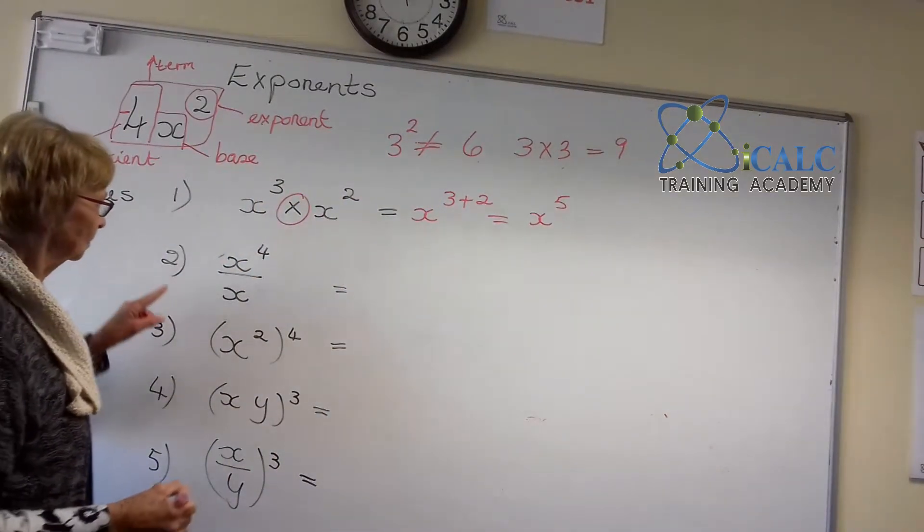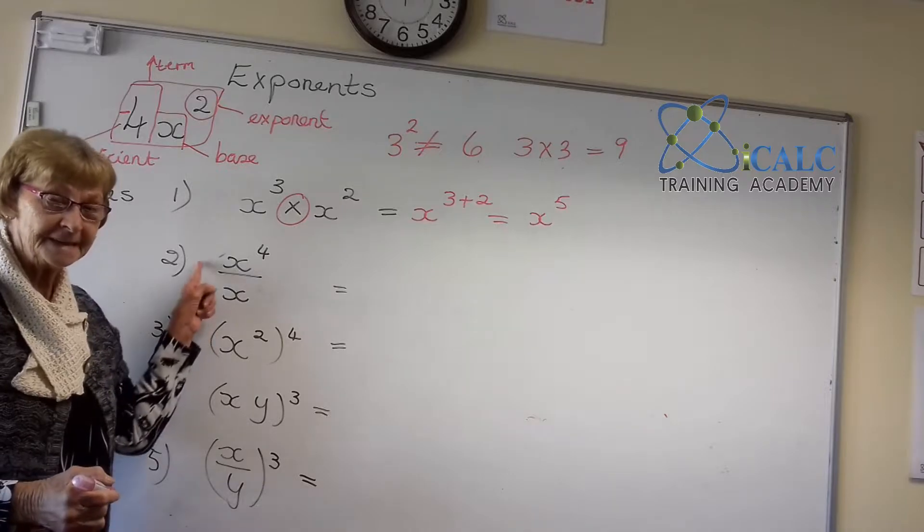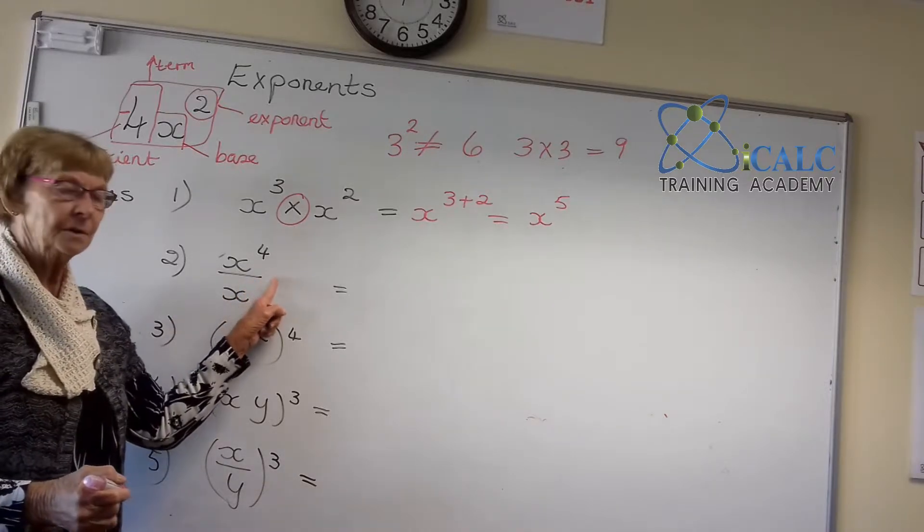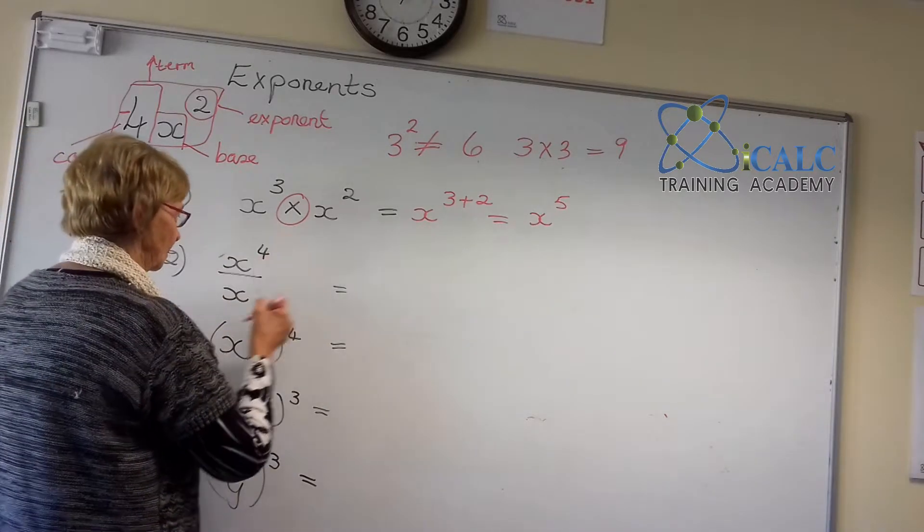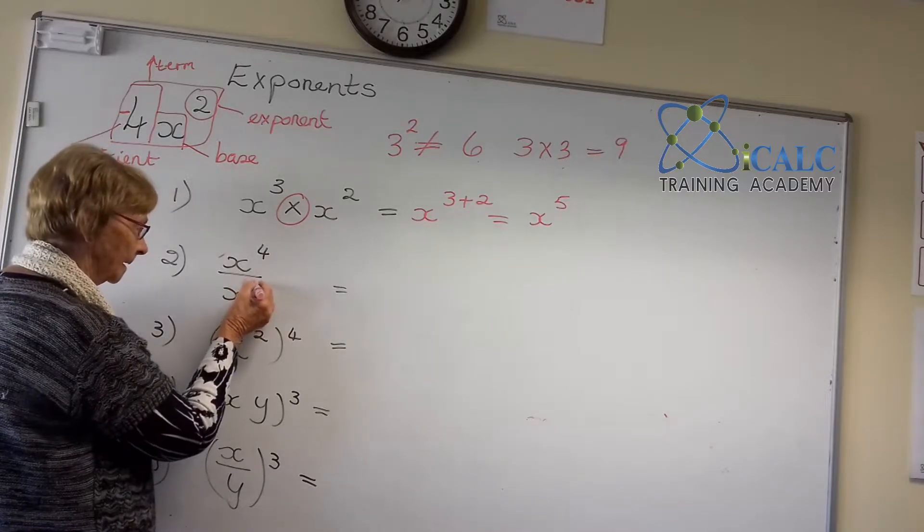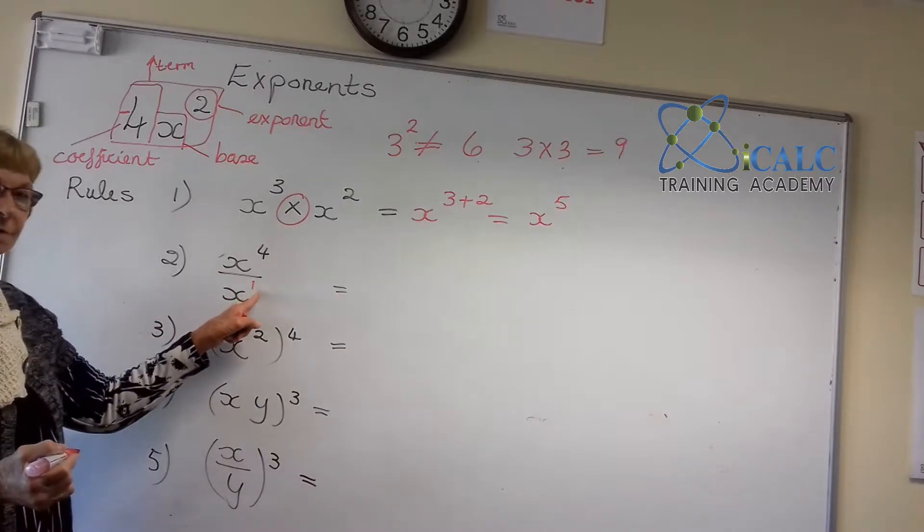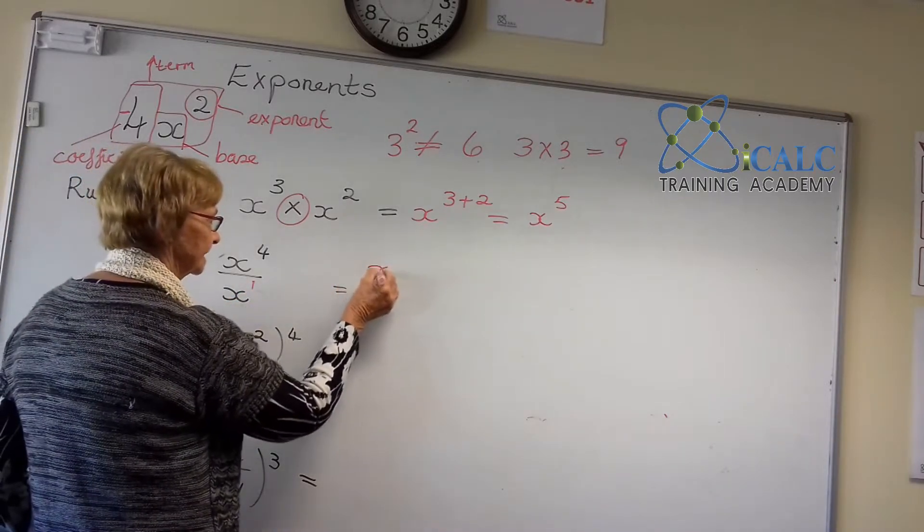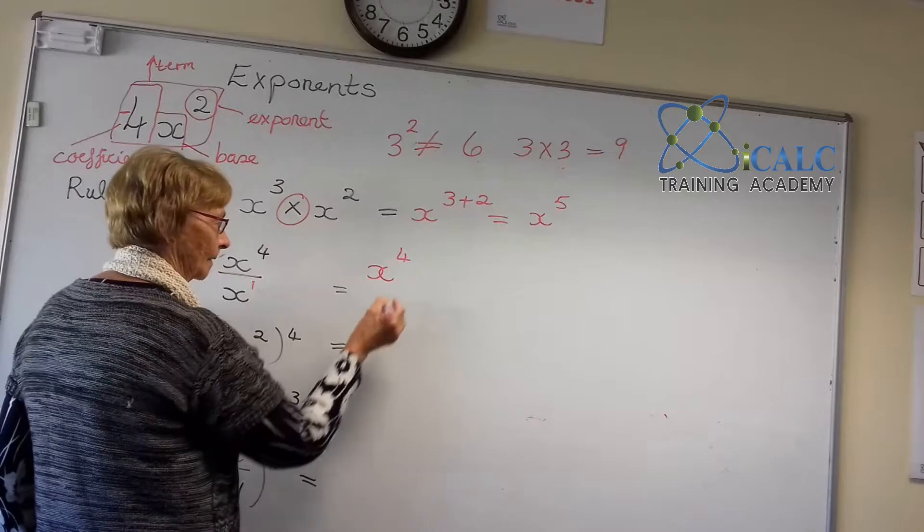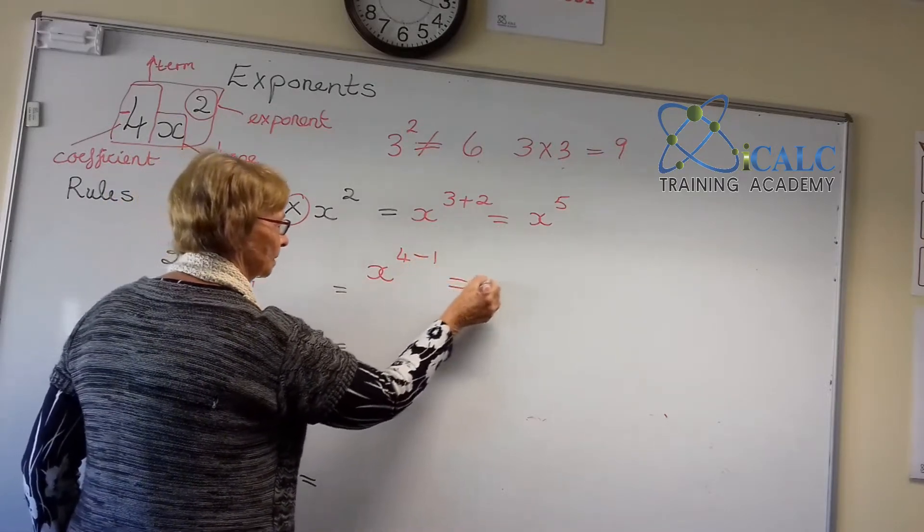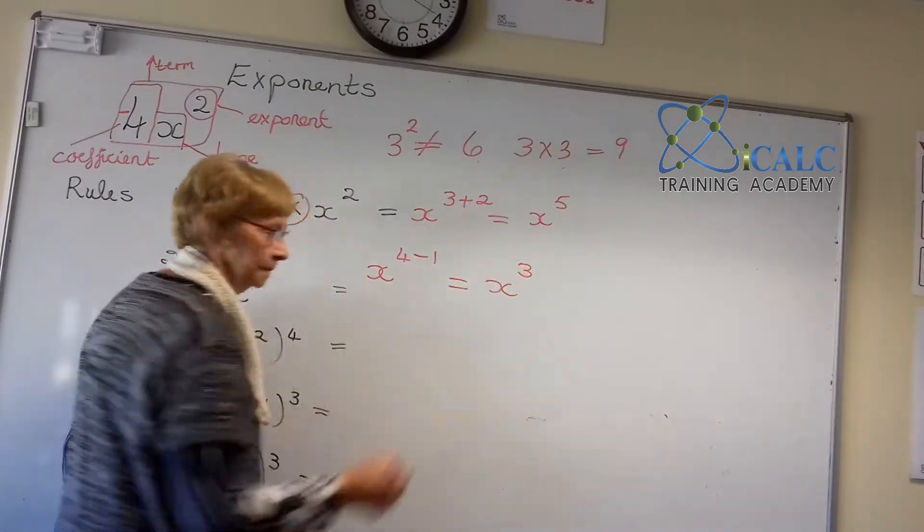The second rule, when we are dividing bases that are the same, we are going to subtract. So we don't write the 1 there, but we know x on its own is actually x to the power of 1. So in this case, it would be x to the power of 4 minus 1, which will then give us x cubed.